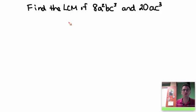In this tutorial, we're going to look at how to find the LCM of two different monomials. Remember, a monomial is a combination of a number with some variables.